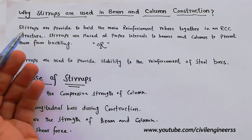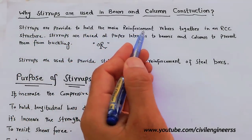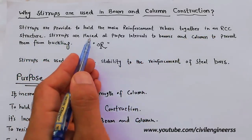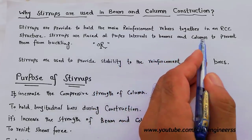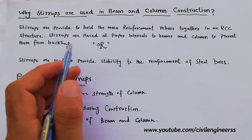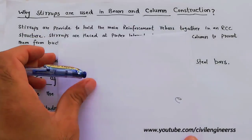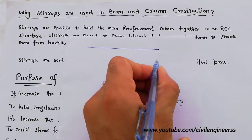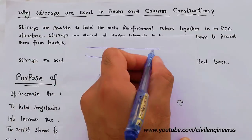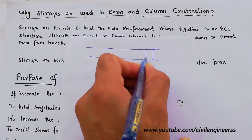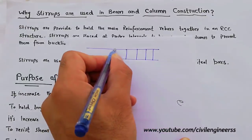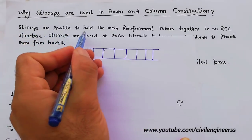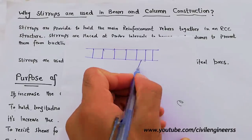Stirrups are provided to hold the main reinforcement rebar together in an RCC structure. Stirrups are placed at proper intervals in beam and column to prevent them from buckling. So in a beam, we provide stirrups to hold the main reinforcement.